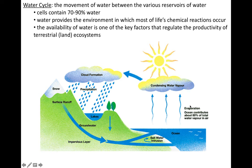Water cycle major terms: evaporation — water going from a liquid to a gas phase. Condensation is a fancy word that means going from a gas phase to a liquid phase, and that condensation generally leads to cloud formation, which means it's going to fall back to the earth as precipitation.